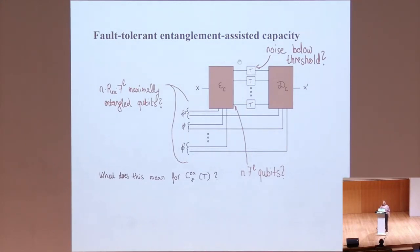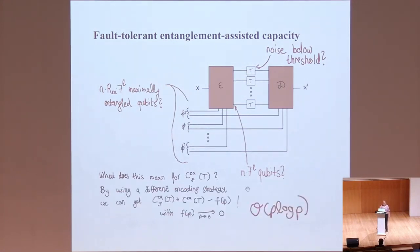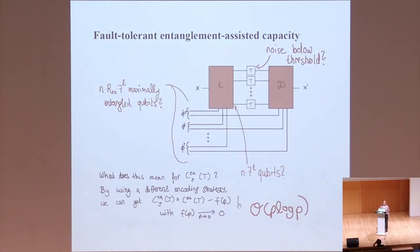Also, if you are considering this kind of setup, then your channels for which you can get some capacity will all have to be quite close to identity, because they would also have to be below the threshold. This doesn't really work — it gives you a really bad capacity that goes to zero. What we did is use a different strategy by which we can get that the fault-tolerant version of the capacity is lower bounded by the normal faultless version of the entanglement-assisted capacity, reduced by some small function of the gate error that goes to zero as P goes to zero, and this is for all channels.